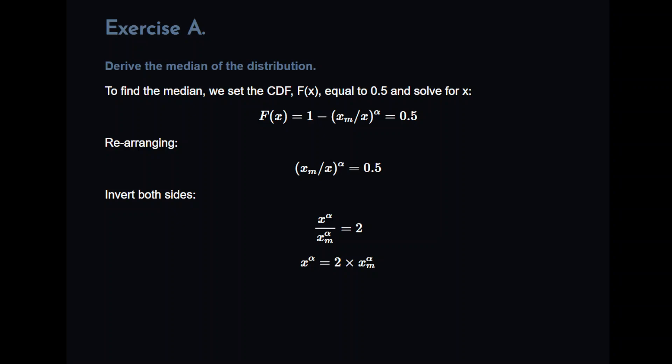This is the toughest one I think, Exercise A and B. The first one, derive the median of the distribution. The game plan here usually follows the same for any time you have to find the median of a distribution. To find the median of a distribution, you set the cumulative distribution function F and let that equal to 0.5 and solve for X. And pretty much in every case, this is how you tackle the median of the distribution questions.